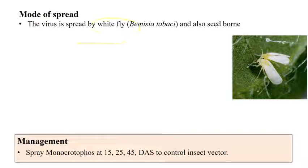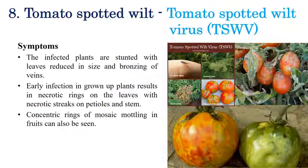Leaf curl virus is transmitted by the whitefly Bemisia tabaci. For management, spray monocrotophos at 12, 25, and 45 days after sowing to control the vector. Since this is a vector-borne disease, controlling the insect vector through insecticide application will ultimately control the disease.